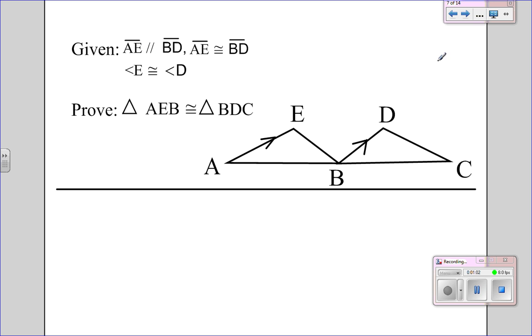So let's go ahead and look at two proofs that involve parallel lines. Given AE is parallel to BD, so it's marked with arrows here, which means parallel, not congruent necessarily. AE is congruent to BD.